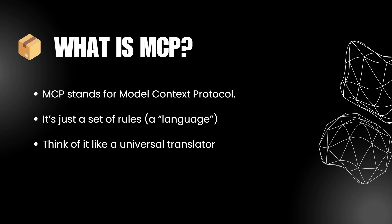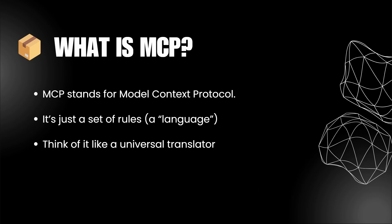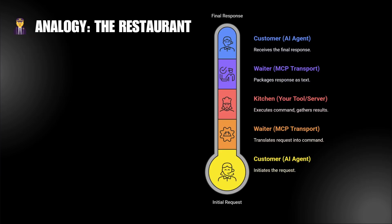MCP stands for Model Context Protocol. It's just a set of rules or a language that lets an AI agent talk to your tools and services in a predictable, structured way. Think of it as a universal translator — your AI model says something like 'get me the list of pods' and MCP makes sure that request gets executed against your Kubernetes cluster.